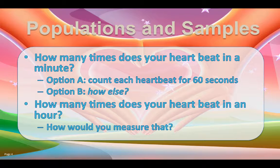But what if I want to know how often your heart beats in a typical hour, including the times when you're active and when you're resting? I would do better to measure your heart rate for short intervals at multiple randomly selected times throughout the hour, and then average those rates.